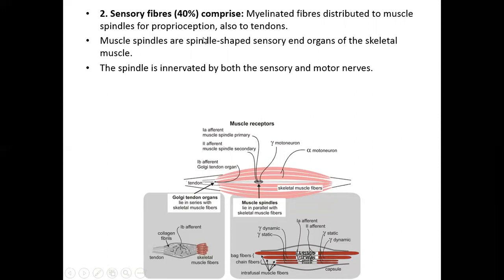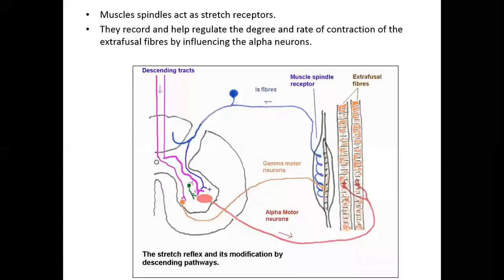Myelinated sensory fibers are distributed to the muscle spindle for proprioception and to the tendons. Proprioception senses the state of the muscle — whether it is contracted, fully contracted, etc. — and this information is relayed to the brain via the spindles, the intrafusal fibers. Muscle spindles are spindle-shaped sensory organs within skeletal muscle, innervated by both sensory and motor nerves. Extrafusal fibers are supplied by alpha motor neurons, and gamma motor neurons supply the spindle fibers. Afferent nerves from the muscle spindle travel to the central nervous system.